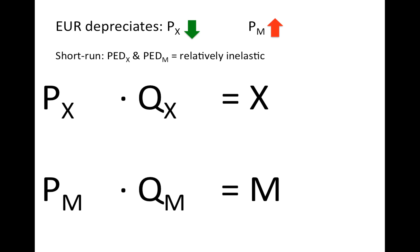Now suppose we are in the short run. If the euro depreciates, the exports from the European Union become cheaper and imports become more expensive. In the Marshall-Lerner condition, we assume that in the short run the PED of both exports and imports are relatively inelastic. If the price of exports is falling and exports are relatively inelastic, the quantity exported will increase, but only by a small amount. Since the increase in quantity is smaller than the decrease in price, the overall value of exports will fall.